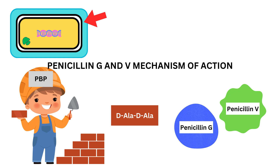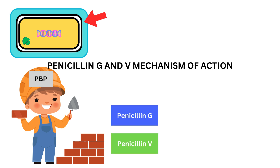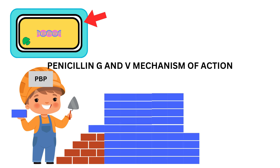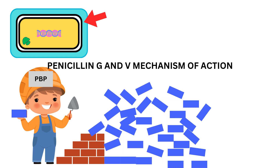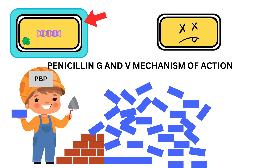Imagine penicillin G and V entering the construction site. These antibiotics look like D-alanine-D-alanine bricks — like decoys. So the workers, the penicillin-binding proteins, accidentally use the wrong blocks instead of the real ones. This messes up the wall, making it weak. Without a strong cell wall, the bacteria can't survive.